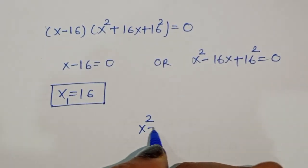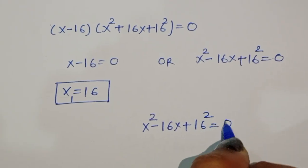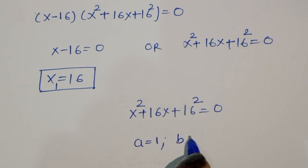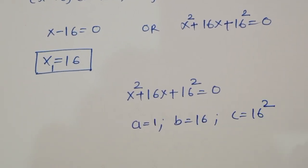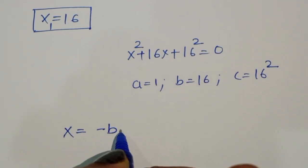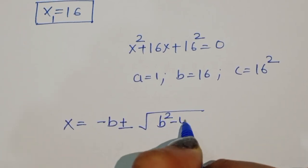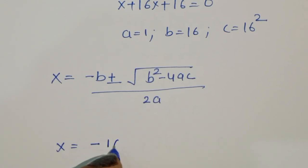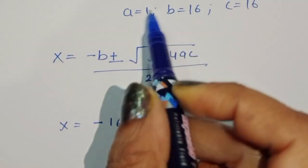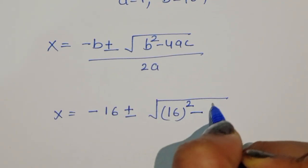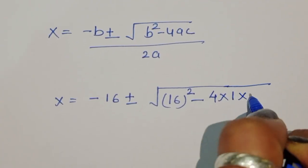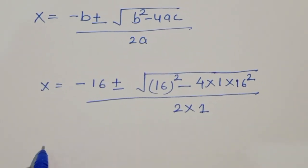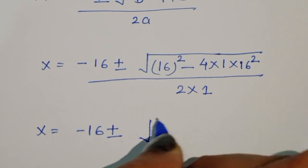From the second equation, x squared plus 16x plus 16 squared equals 0. Here the coefficients are: a equals 1, b equals 16, and c equals 16 squared. We apply the quadratic formula: x equals minus b plus or minus square root of b squared minus 4ac, all divided by 2a.